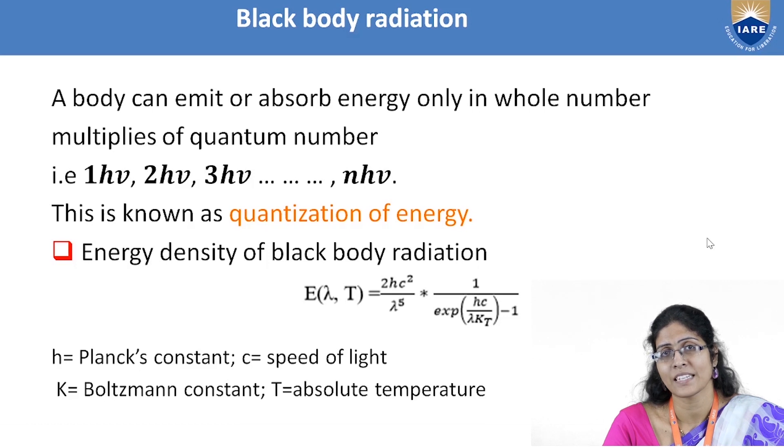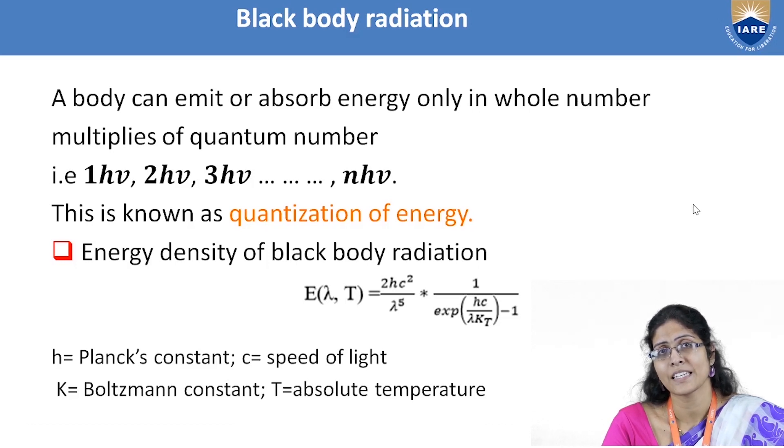Planck was also able to give an expression for the energy density of black body radiation in terms of Planck's constant, the speed of light, Boltzmann's constant, and the absolute temperature. He was thereby able to give an accurate prediction matching the true experimental values. This is, of course, a fundamental reality of nature — energy appears to be continuous at the macroscopic scale, but at the microscopic scale it is quantized. Thus Max Planck solved one of the biggest problems of the 19th century through the theory of quantization, and his research led to many more amazing theories and experiments.